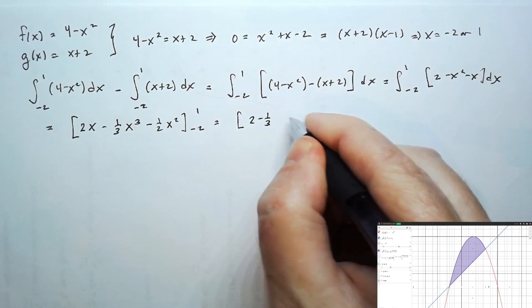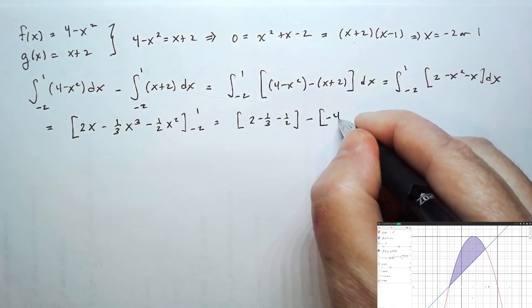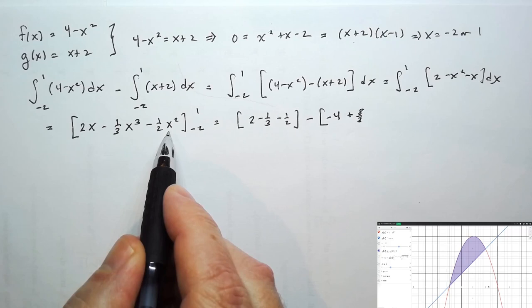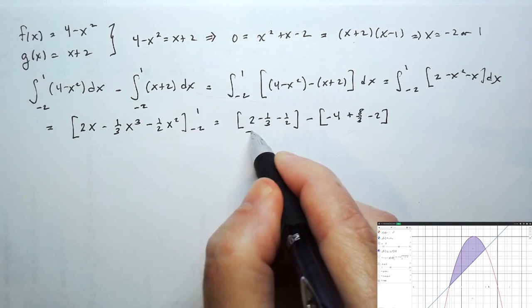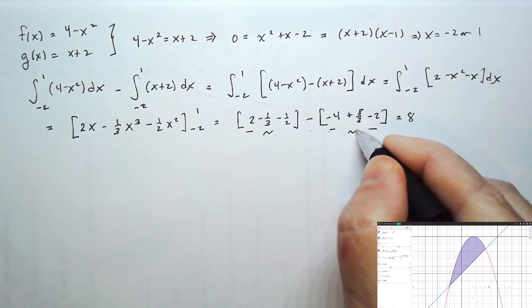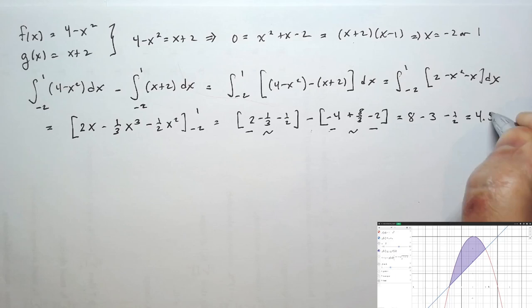When I plug in 1, I get 2 minus one-third minus one-half, and I subtract. I keep both of these in brackets so I can distribute the minus sign. When I plug in negative 2, I get negative 4, plus 8 thirds from the cubic term, and minus 2 from the quadratic term. Simplifying: 2 minus negative 4 is 6, minus negative 2 is 8, then minus one-third minus 8 thirds is minus 3, and finally minus one-half. That gives me 4.5 as the area.